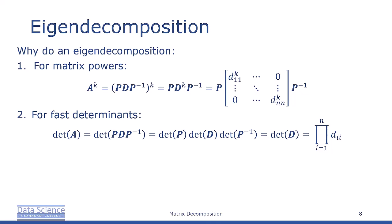To compute determinants quicker, we note that determinant A, if it has an eigendecomposition, will be equal to the determinant of P D P inverse. And that's the determinant of P, the determinant of D, and the determinant of P inverse. And of course, once we have some cancellation there, we end up with the determinant of D, which is the product of everything along the main diagonal.